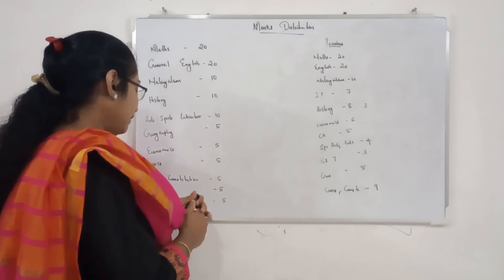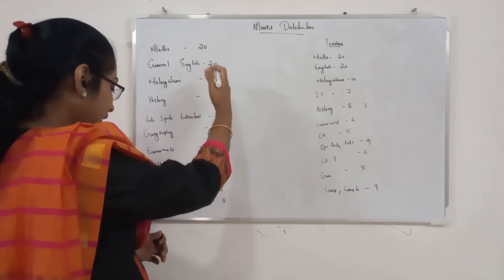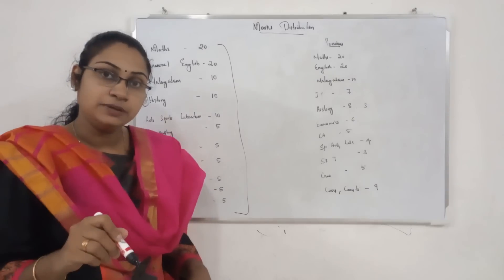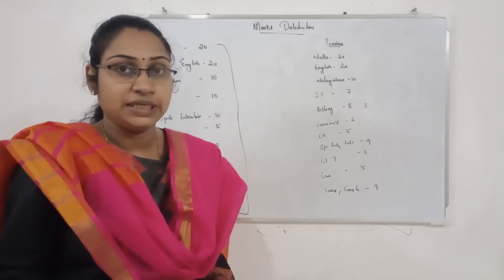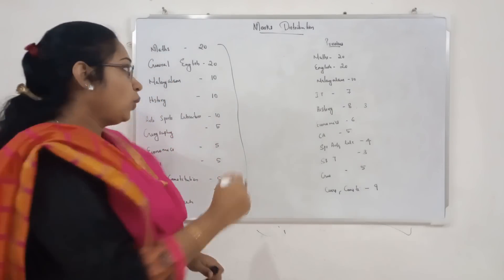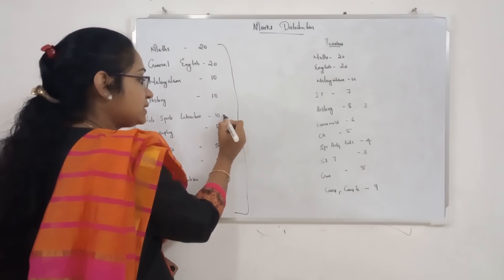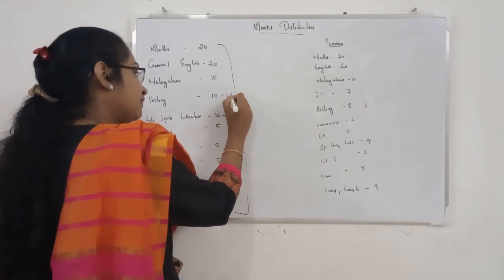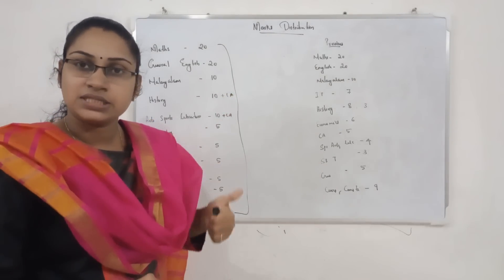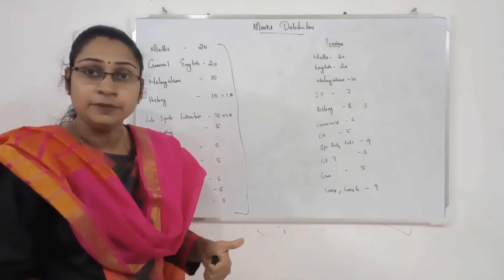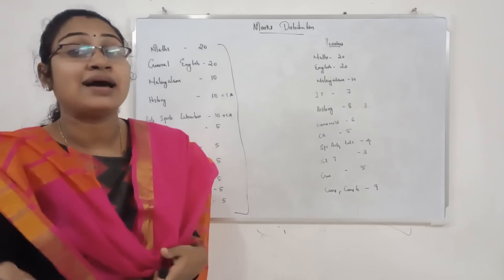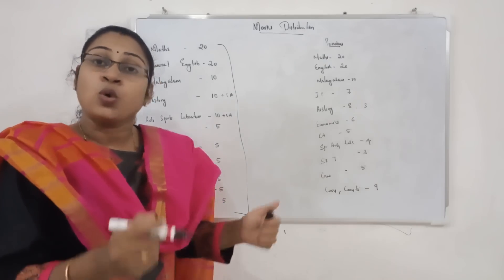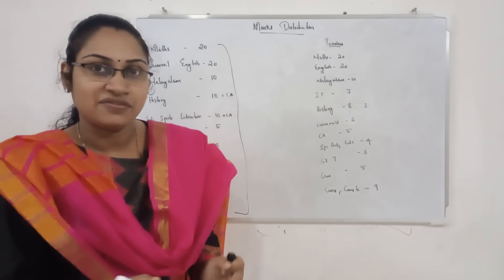There is a section in the current affairs — there is no standalone current affairs section. The Arts and Sports Literature plus current affairs is part of the syllabus. History plus current affairs is also included. Other subjects include current affairs as well.